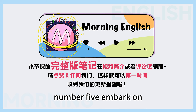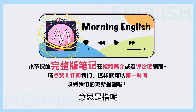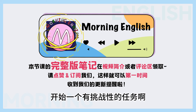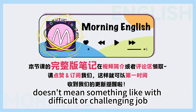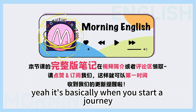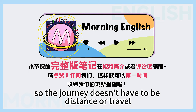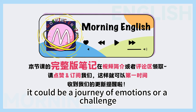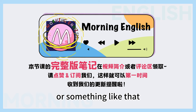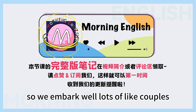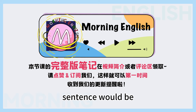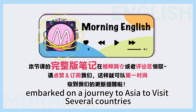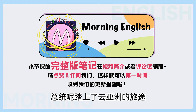Number five: embark on. 意思是指呢，开始一个有挑战性的任务。 Does it mean something like a difficult or challenging job? Yeah, it's basically when you start a journey. The journey doesn't have to be distance or travel — it could be a journey of emotions or a challenge. Like many couples when they get married, they say we embark on this journey of life. Another example sentence: The president embarked on a journey to Asia to visit several countries. 总统呢踏上了去亚洲的旅途。